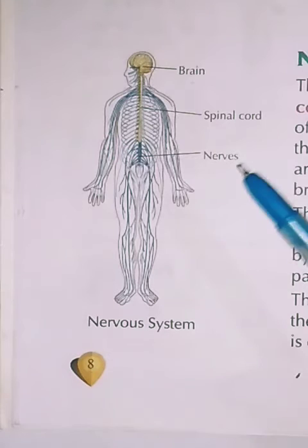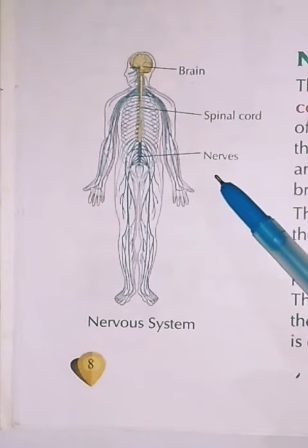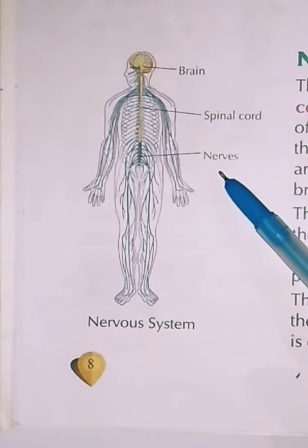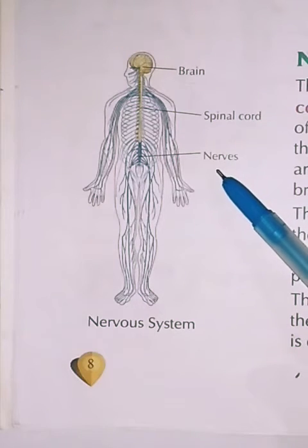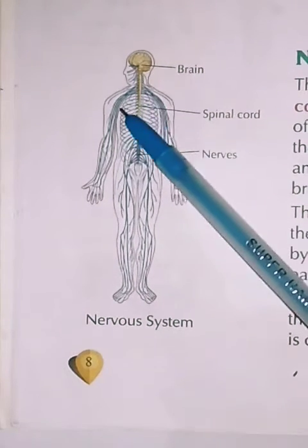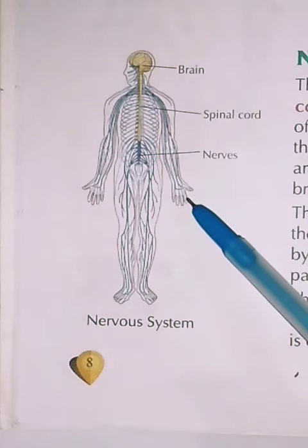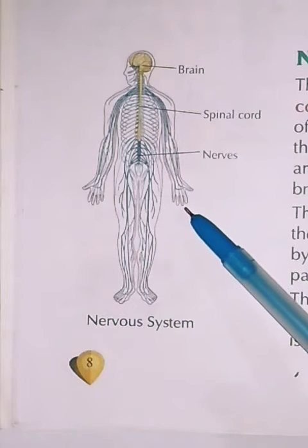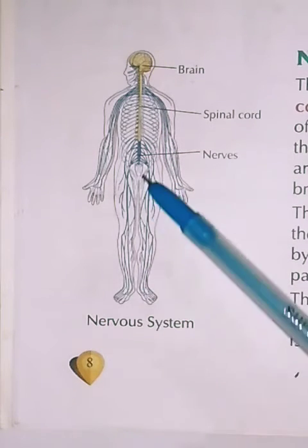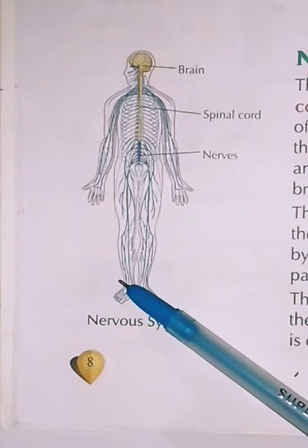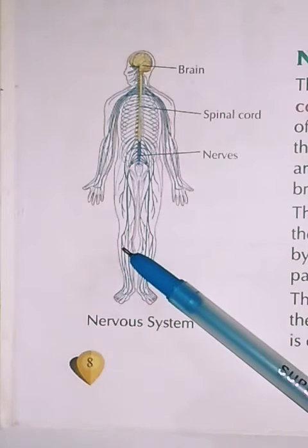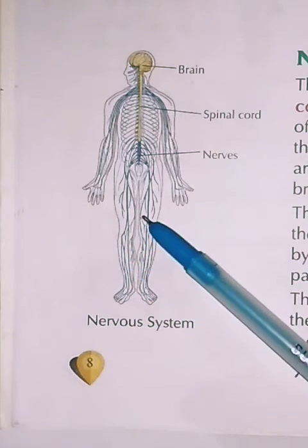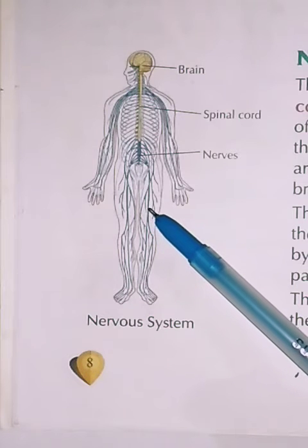The next part is the nerves. The nerves form a network to and from the brain. They are present throughout our body — in our hands and our legs. The whole network connects the brain to the spinal cord and all parts of our body.